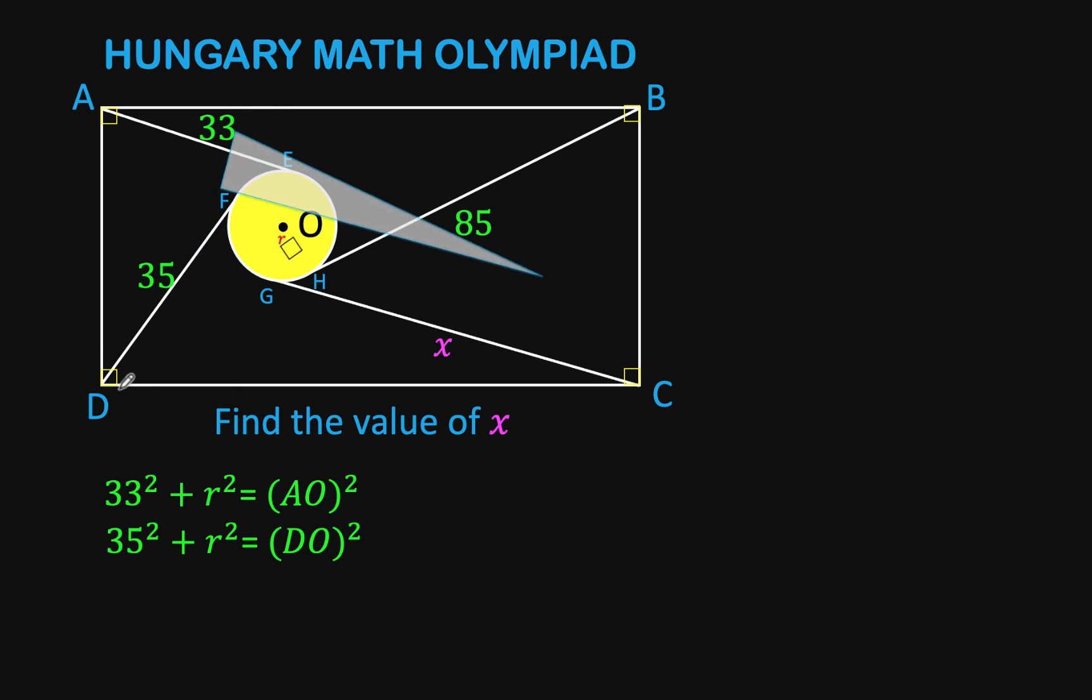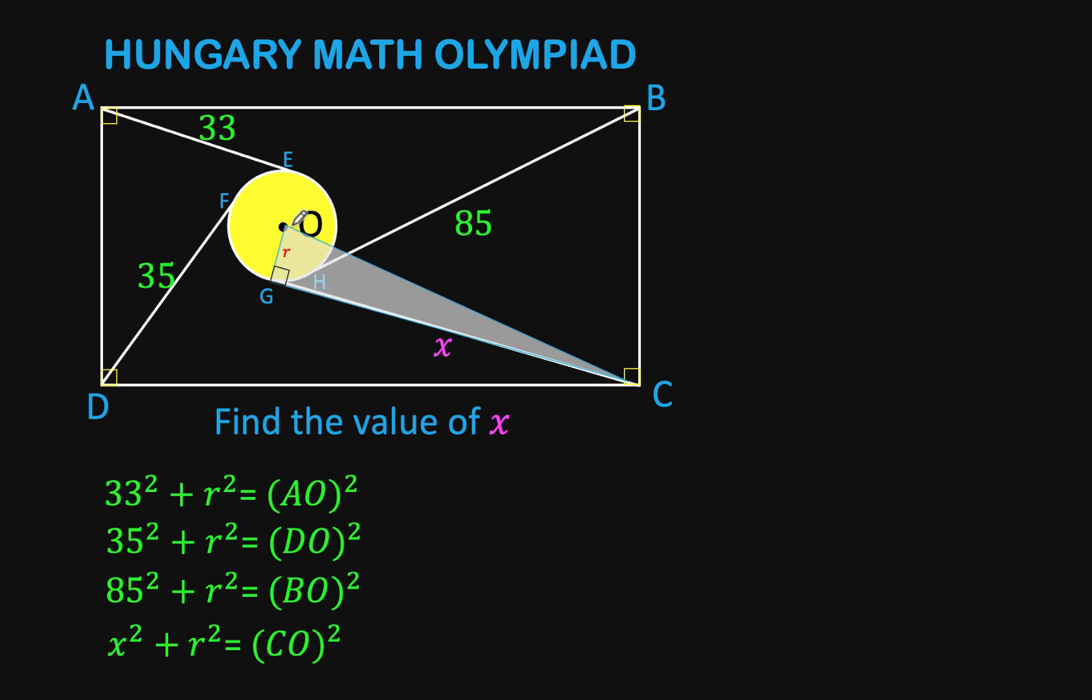Then for this right triangle here, 85 squared plus R squared is equal to BO squared. And finally, for this other right triangle, X squared plus R squared is equal to the square of the hypotenuse CO.